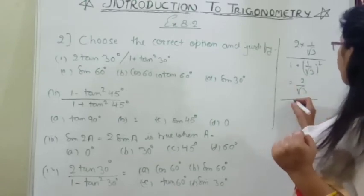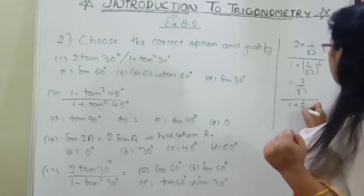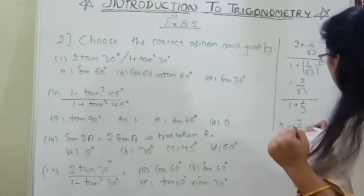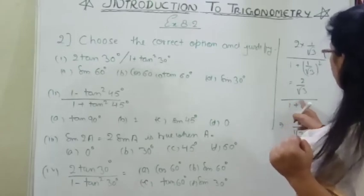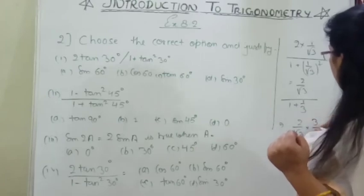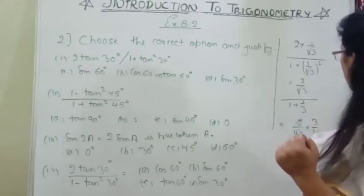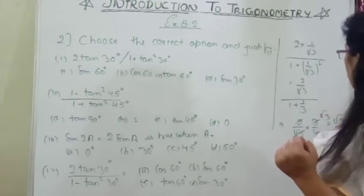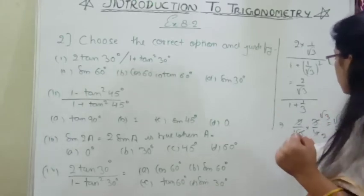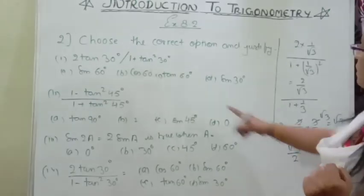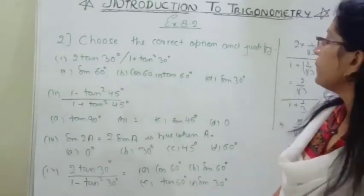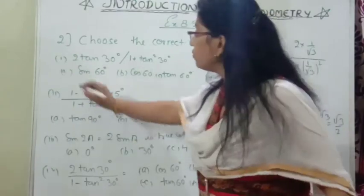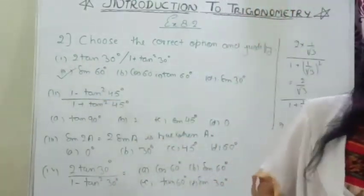Whole divided by 1 plus 1/3. So you will get 2/√3 divided by 4/3, which gives 2/√3 into 3/4. Simplifying, we get √3/2. So we got √3/2 — let us see which value is √3/2. Sin 60° = √3/2. Yes, we got this only.